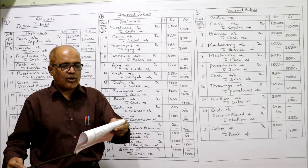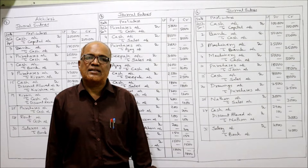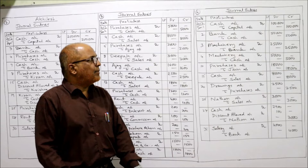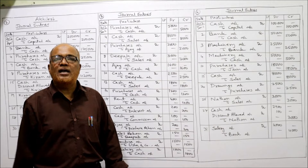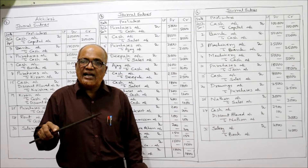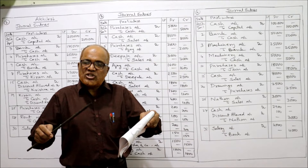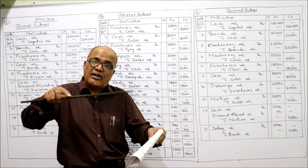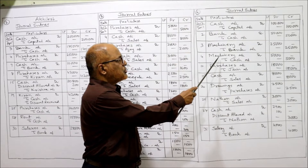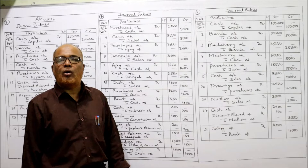Next, 3rd: purchased machinery by check — machinery is an asset, asset is coming in so debit the asset. Machinery account debit to bank, because we are issuing a check. Being the machinery purchased and check issued. Next: machinery installation expenses paid in cash — whenever an asset is purchased, incidental expenses are added to the asset account. Installation expenses paid on machinery are debited to machinery account only. Entry: machinery account debit to cash 5,000. Being the installation expenses paid on machinery.